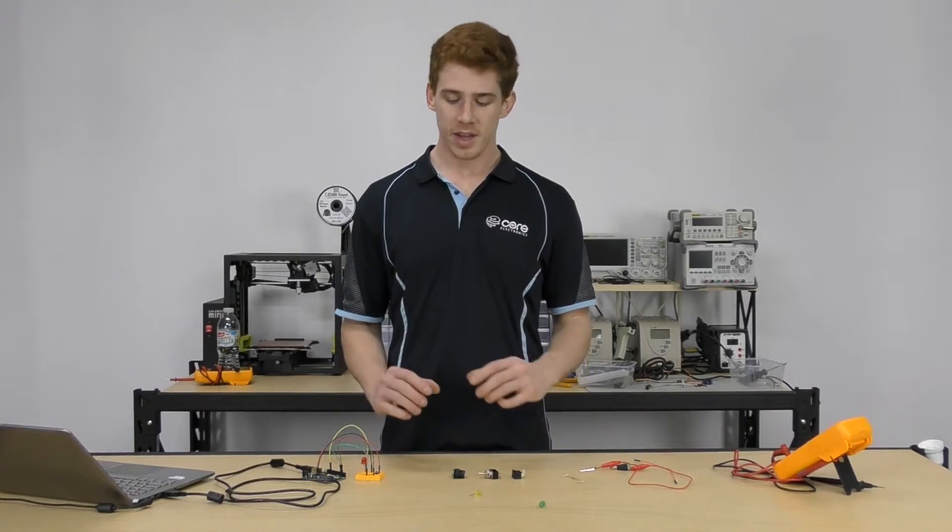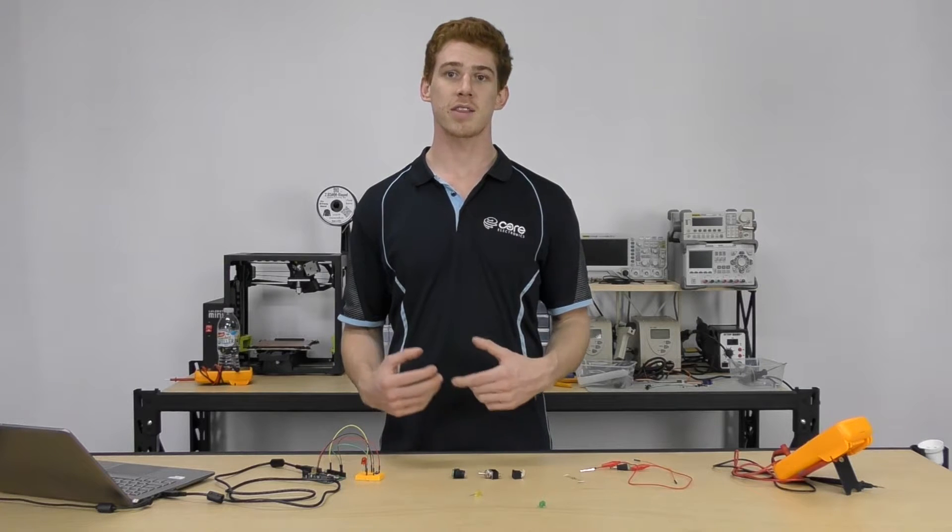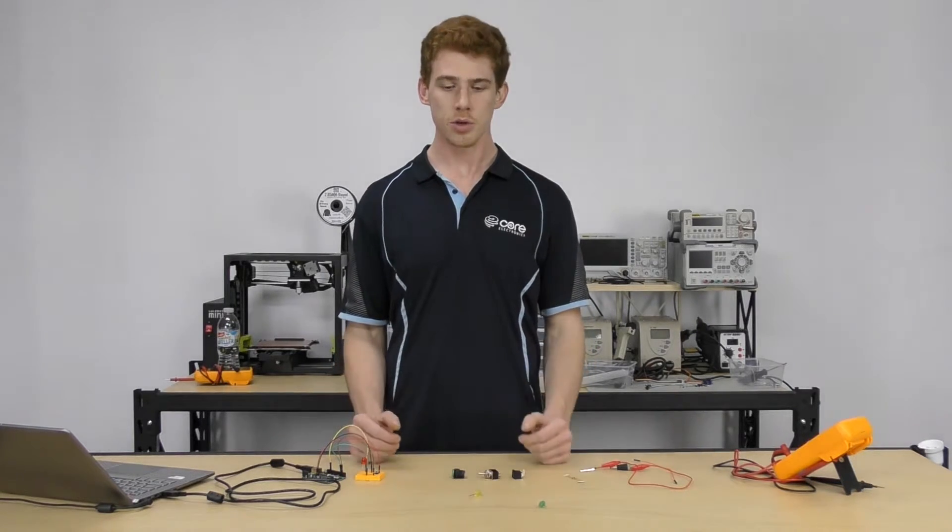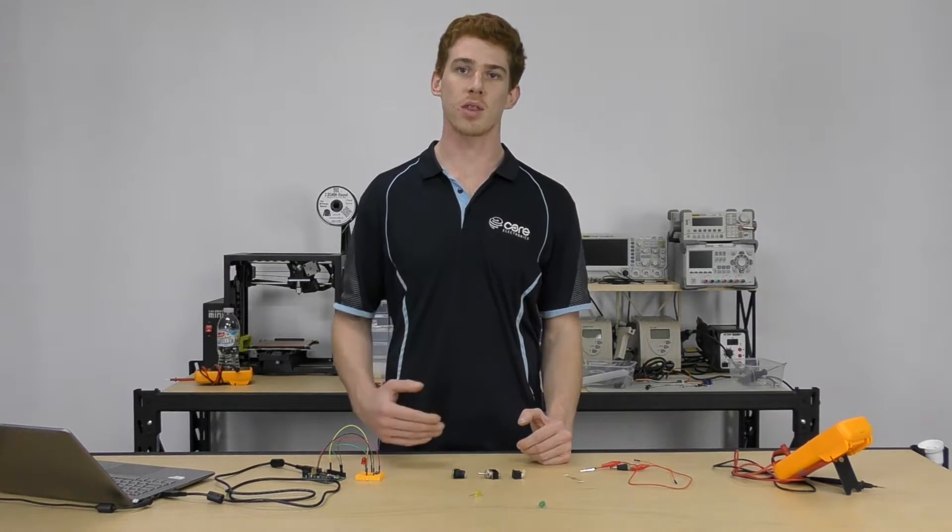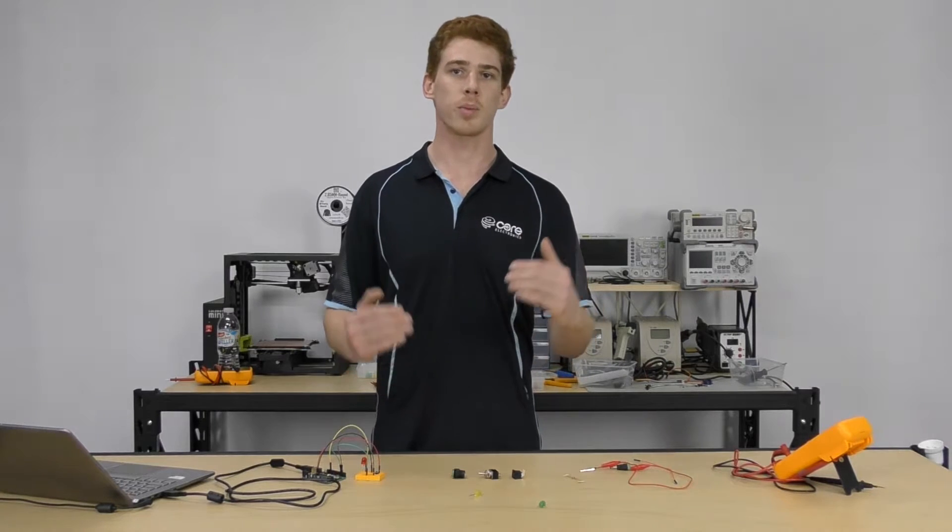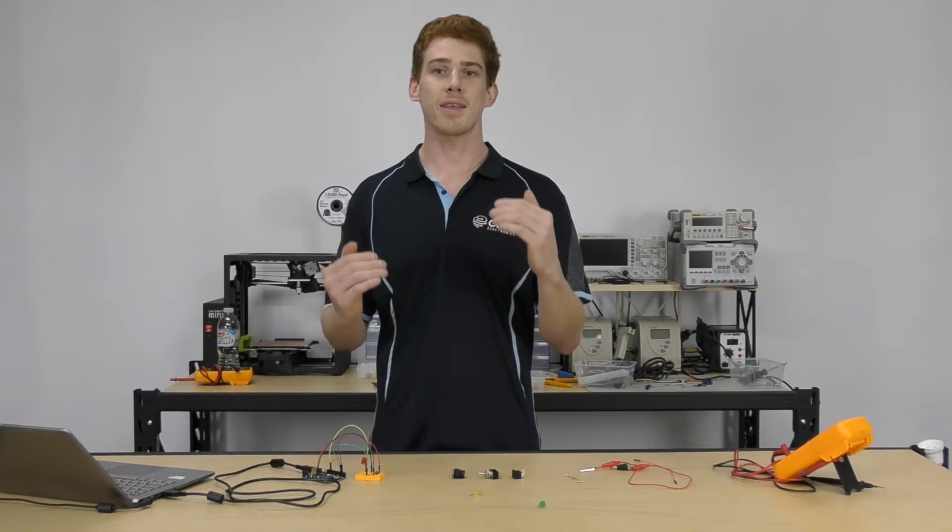What we're going to do today is interface our momentary push button such that the LED will be controlled by the state that the switch is put into. We'll write a sketch that can remember the last time that the button was pushed and what the current state of the button is, and it will be able to compare that and turn the LED on or off.